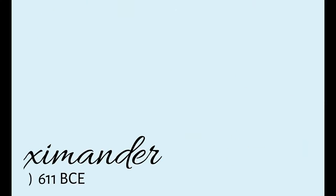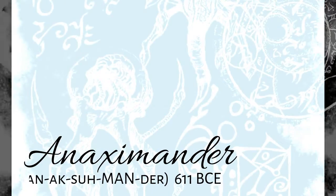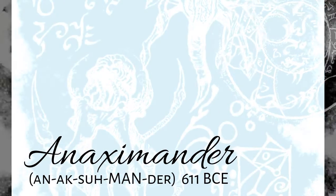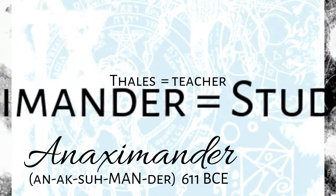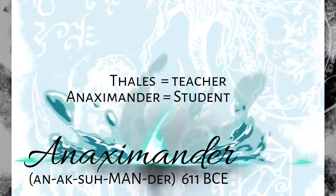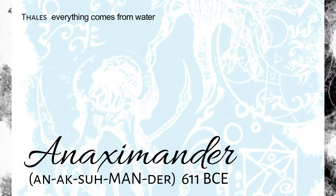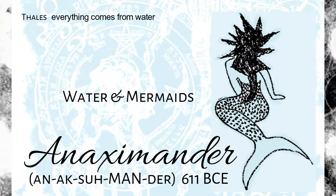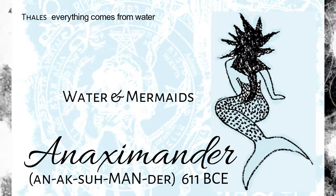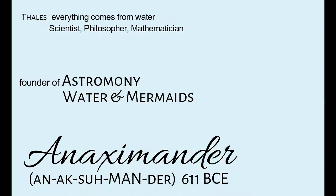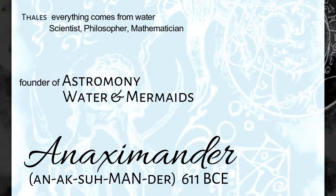A quarter of a century after Thales was born came another scientist, and his name was Anaximander. Anaximander was a student of Thales, and like Thales, he believed that everything came from water. He took it a step further and thought that humans evolved from mermaids in the ocean. While Thales was a scientist, a philosopher, and a mathematician, Anaximander was the founder of astronomy.